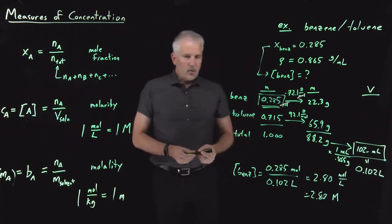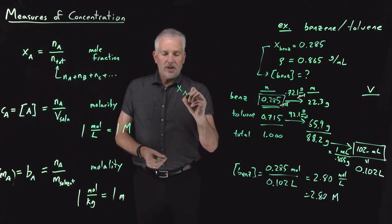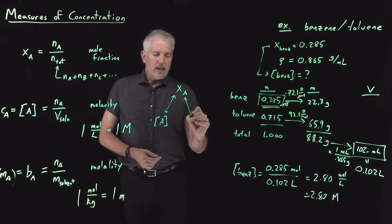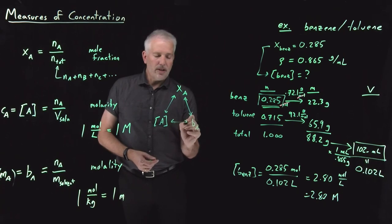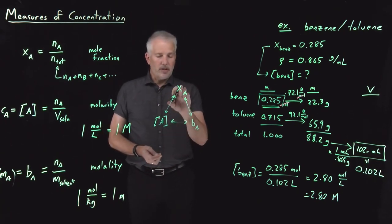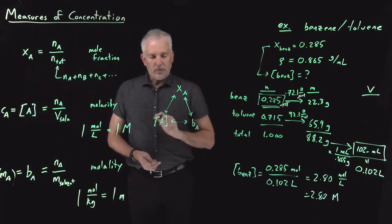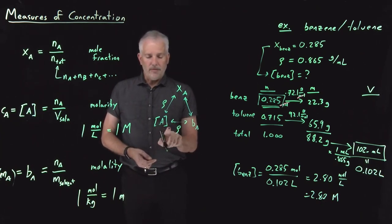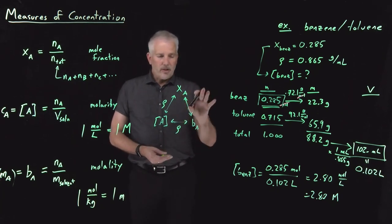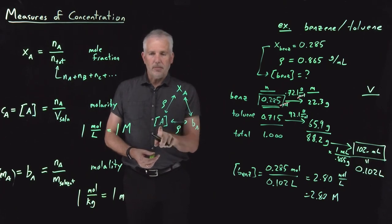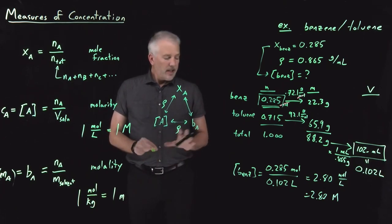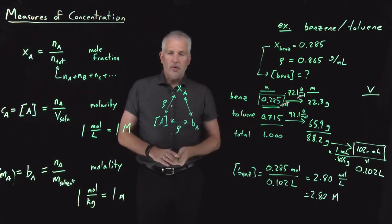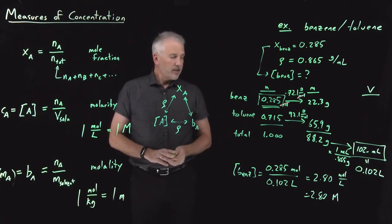That example shows how, given a mole fraction, we can obtain a molarity. We could have gone the other way as well, or obtained molality instead. It's possible to convert any of these concentration units from one to another, though sometimes extra information — like density or molar mass — is needed. Being asked to convert from one concentration unit to another is a relatively common problem.